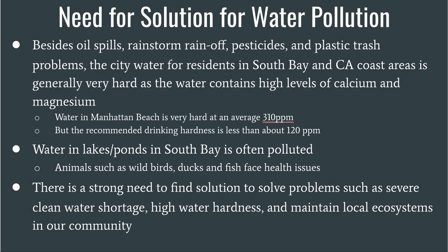Besides oil spills, rainstorm run-offs, pesticides, and plastic trash problems, the city water for residents in the South Bay and California coast city areas is generally very hard, as the water contains high levels of calcium and magnesium. Water in Manhattan Beach is an average of 310 ppm, but the recommended drinking hardness is less than about 120 ppm.